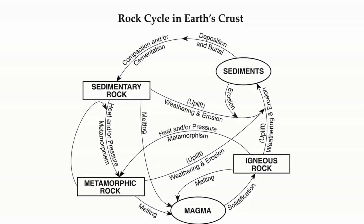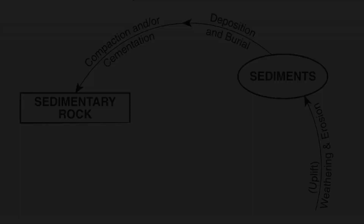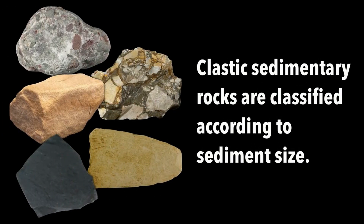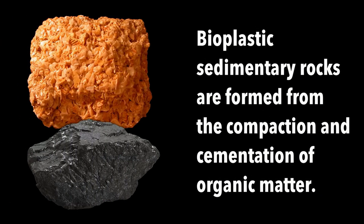Looking at the rock cycle: we need existing rocks to be weathered or broken down to give us sediments. Those sediments can be eroded, moved, deposited, and buried by other sediments, with the weight providing enough pressure for the compaction and cementation needed to form a sedimentary rock. To review: clastic sedimentary rocks are classified by sediment size; crystalline sedimentary rocks form from evaporation or precipitation of minerals in water; and bioclastic sedimentary rocks like limestone and coal form from compaction of organic matter.